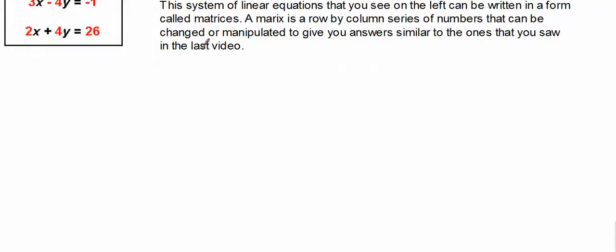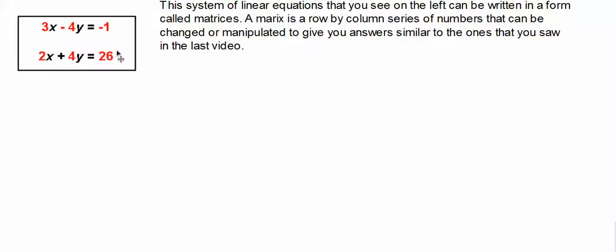What we're going to do is write it in matrix form. Notice that each of these terms have numbers or what we call coefficients. This term has a coefficient of 3, this term has a coefficient of negative 4, this has a constant coefficient of negative 1. This term has a numeric coefficient of 2, this term has a numeric coefficient of 4, and this term has a constant coefficient of 26.